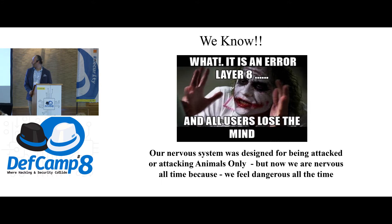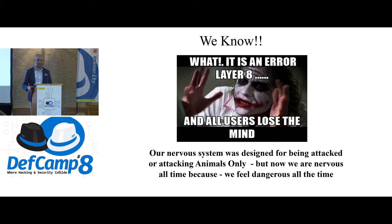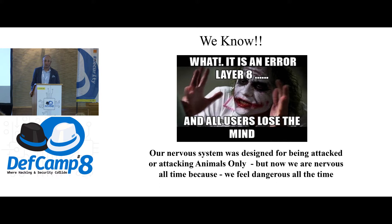Our nervous system was designed thousands of years ago only to react to physical attacks from animals. But now we get nervous all the time because we feel stress around us constantly. As humans, we cannot say we cannot control fear or curiosity, but we can protect against these behaviors.